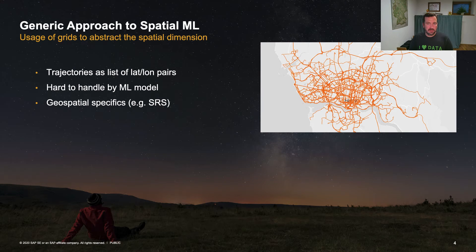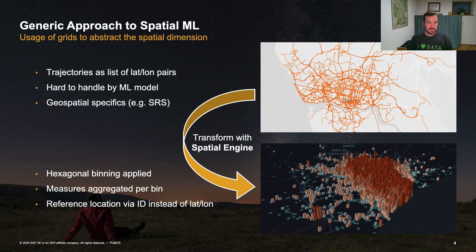How does that look in real life? What you see here is taxi trajectories for the city of Porto — the trajectories of taxis traveling through the city, which is a list of latitude and longitude pairs. On a database level, this is line strings, which is hard to handle by a machine learning model and consists of geospatial specifics like spatial reference systems. I used hexagonal clustering to abstract from those specifics and count the number of taxi pickups for each hexagonal cluster in the city of Porto, which you see depicted here.